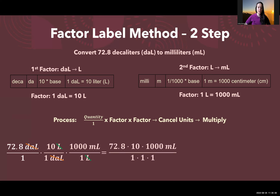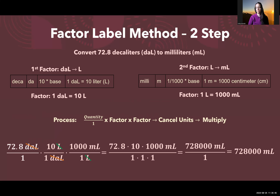Multiplying straight across: 72.8 times 10 times 1,000, with milliliters as the surviving units on top and 1 times 1 times 1 on the bottom. So we get 728,000 milliliters as our final answer.